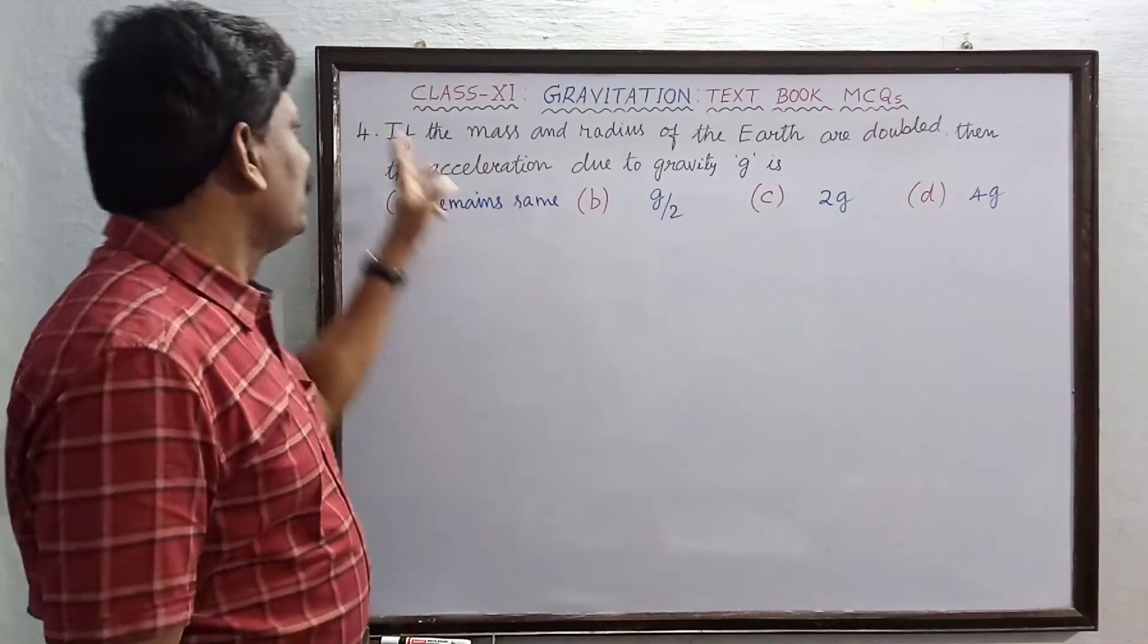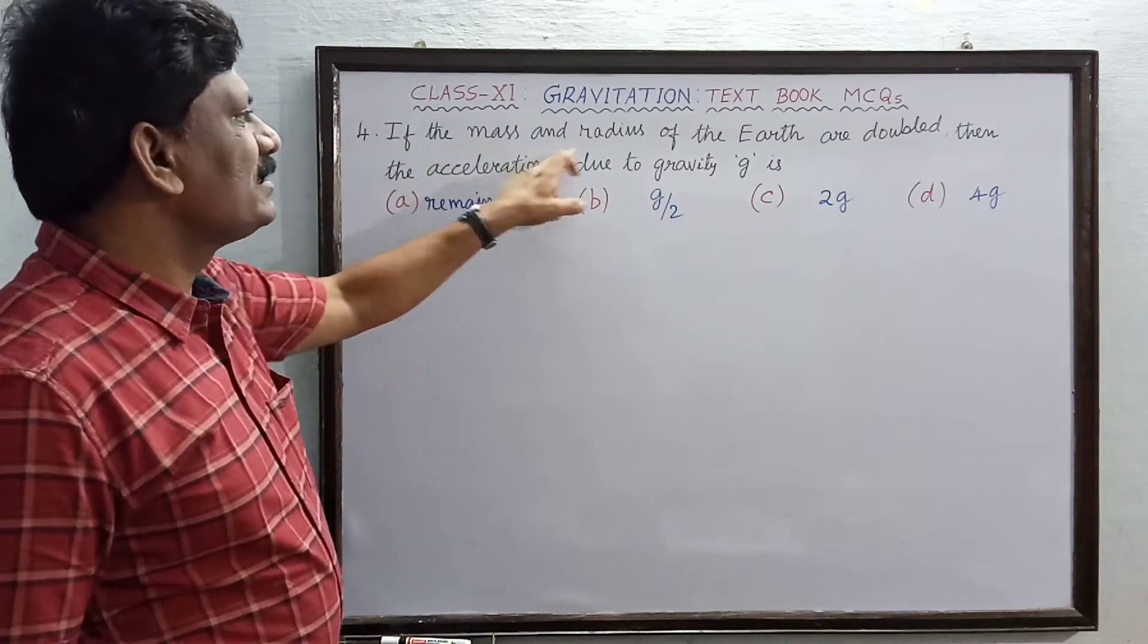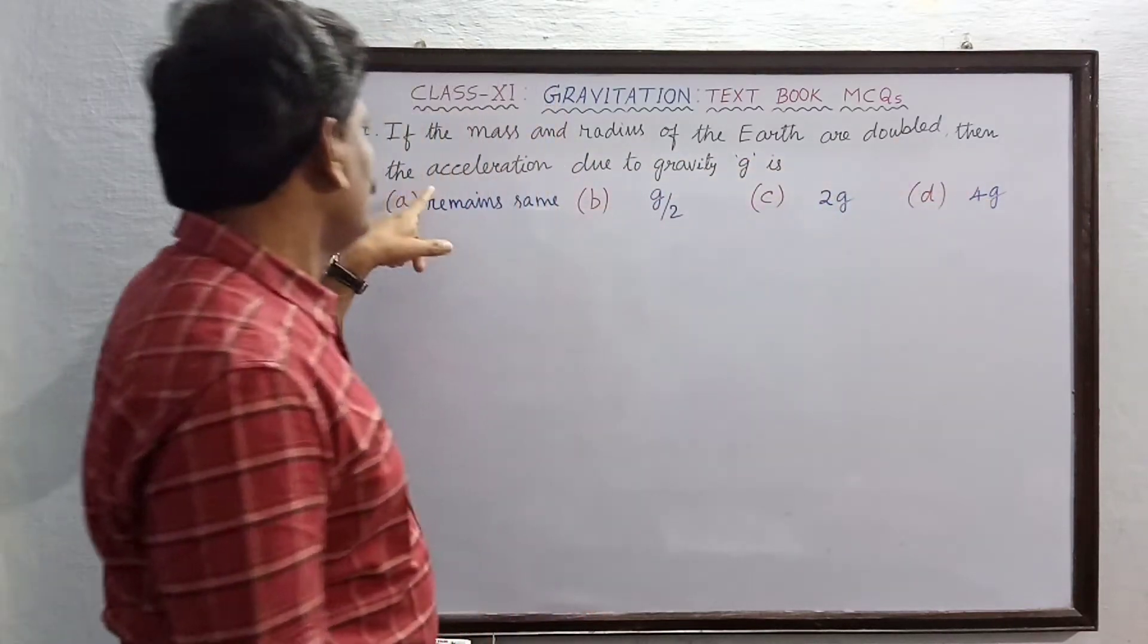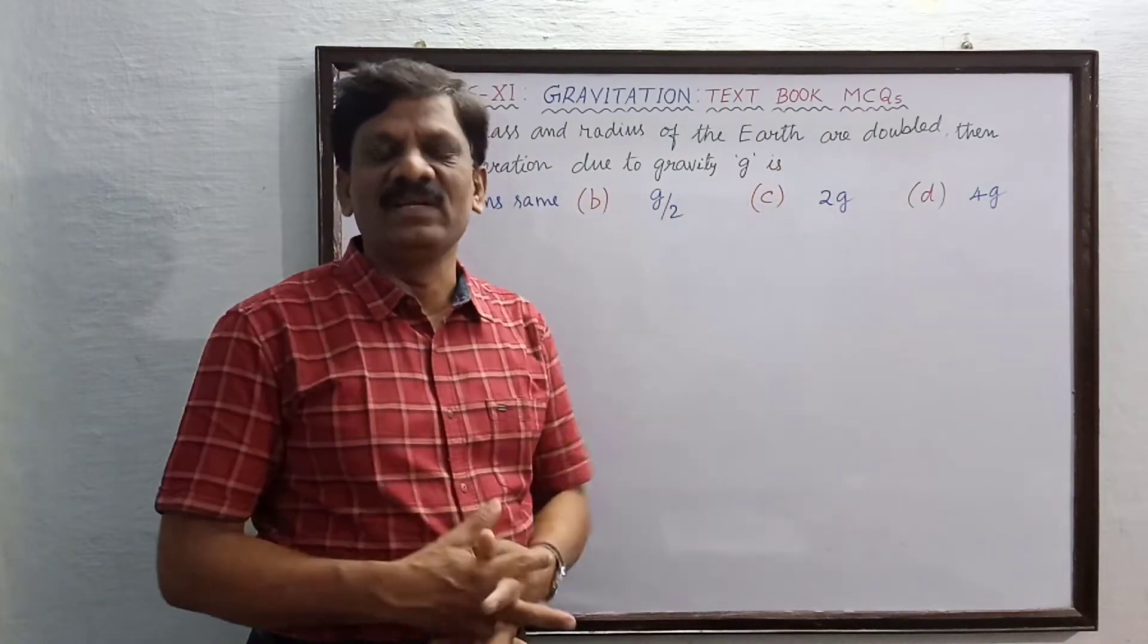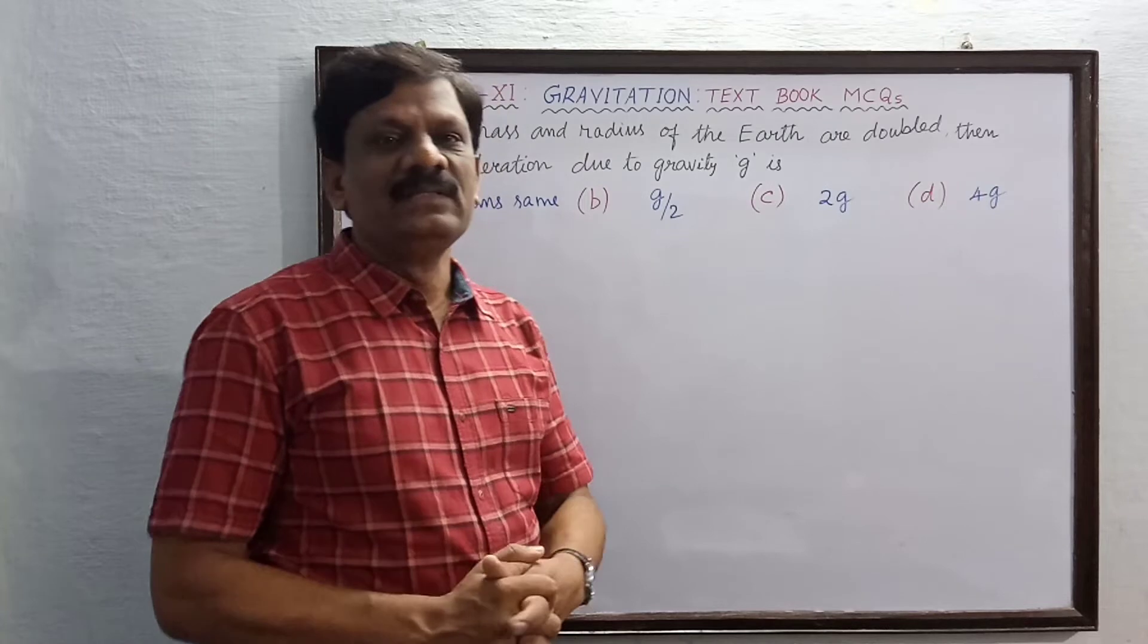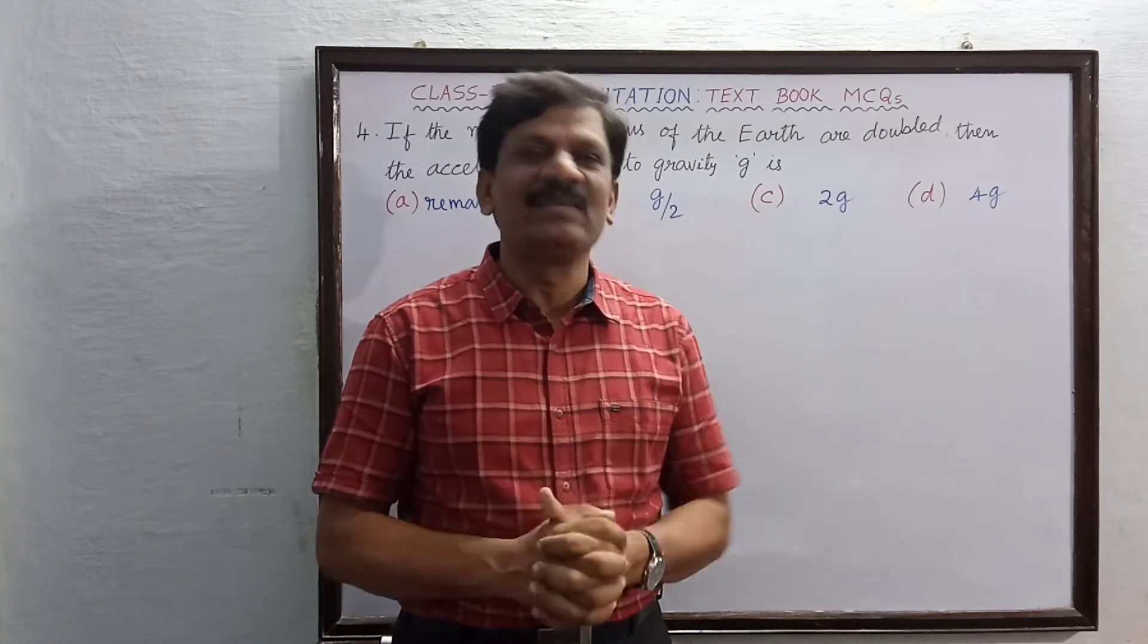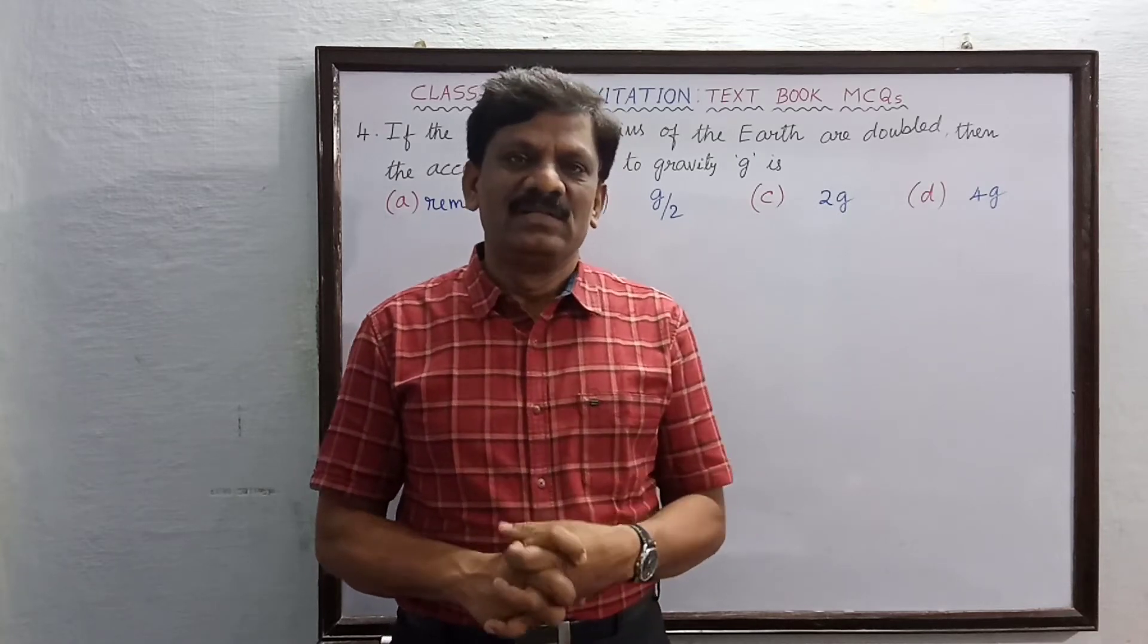Hi students, MCQ number four in the chapter gravitation. If the mass and radius of the Earth are doubled, then the acceleration due to gravity g is to be determined. Suppose the mass of the Earth is doubled from M to 2M and the radius of the Earth is also doubled from R to 2R.